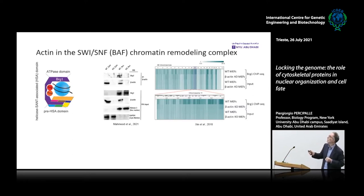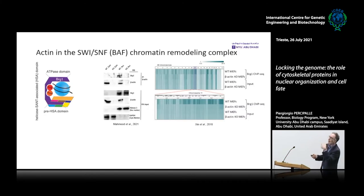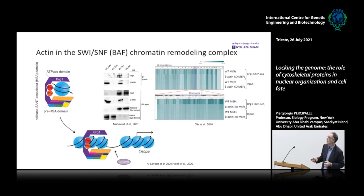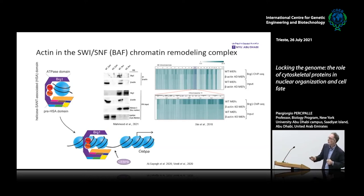These are ChIP-seq analyses performed in the presence and absence of beta-actin in embryonic fibroblasts, published in PLoS Genetics. Using an anti-BRG1 antibody, you see that BRG1 is present across all mouse chromosomes but is lost in the absence of beta-actin. This zoomed-in image shows chromosome 11. We also showed that actin-dependent BRG1 activity and recruitment is important for gene activation — particularly, loss of beta-actin leads to local chromatin compaction preventing C/EBP-alpha activation, impacting adipogenesis.